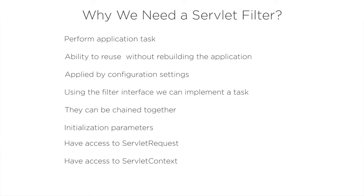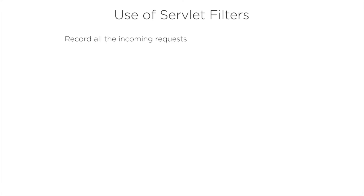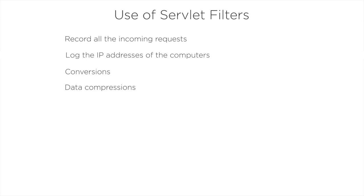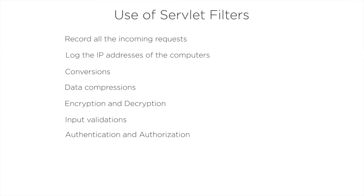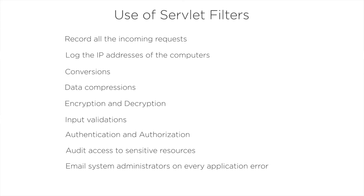Now let us understand where we can use servlet filters. Using filters we can record all incoming requests, log the IP addresses of computers from which requests originate, perform conversions, data compressions, encryption and decryption, input validations, authentication and authorization, audit access to sensitive resources, and email system administrators on every application error. We could also compress the response to reduce overall bandwidth and make the application perform better.